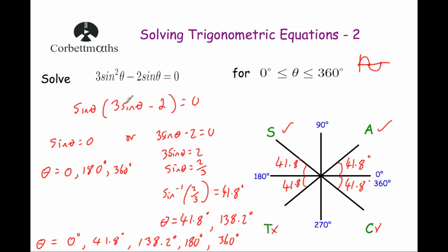If you have a trig equation which looks like a quadratic and equals zero, treat it like a quadratic: factorize it, then find your angles. If you have sine θ or cos θ equal to zero or one, it's simpler to use the graphs to find those solutions quickly.